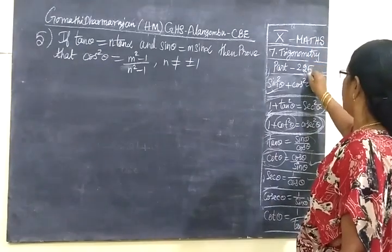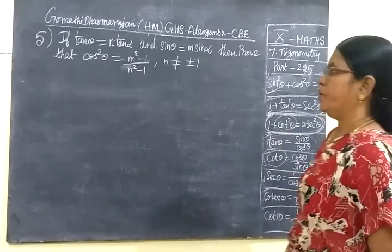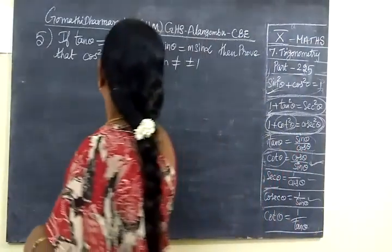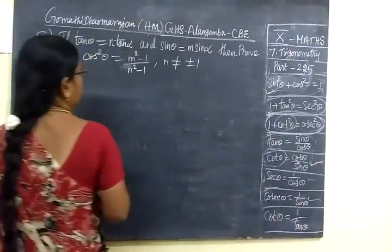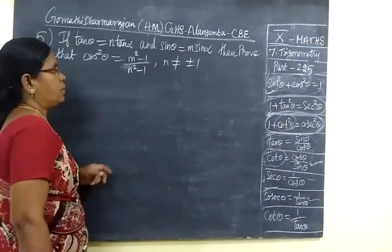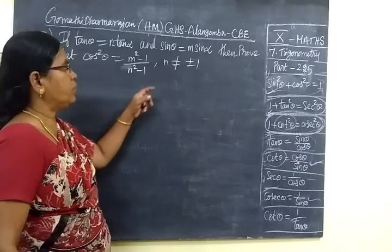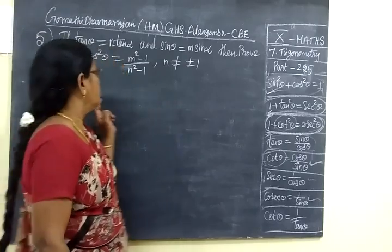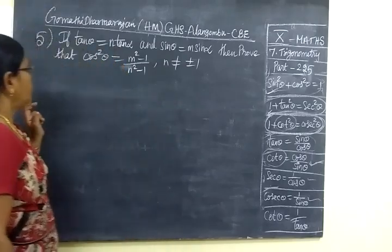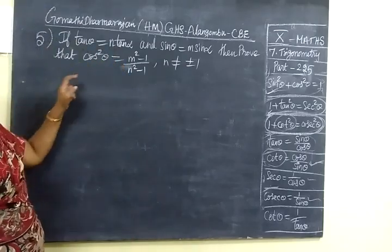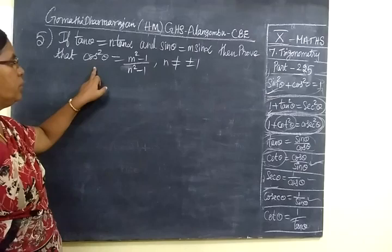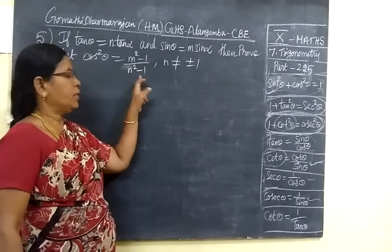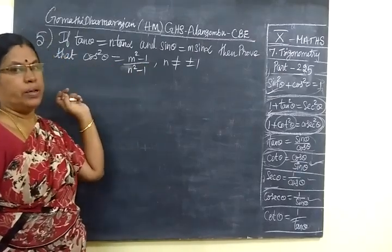Now we see problem 225. If tan θ equals n tan α and sin θ equals m sin α, then we have to prove cos²θ equals (m² - 1)/(n² - 1).